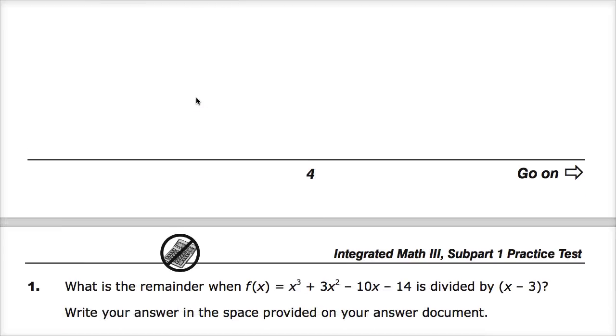What is the remainder when the function x to the third plus 3x squared minus 10x minus 14 is divided by the quantity x minus 3? They'll give you a box and ask you to write your answer in the space provided. Now, there's a couple ways we can go about doing this. We'll talk about synthetic division and long division. But the question is asking you specifically for a remainder. It's a remainder theorem question.